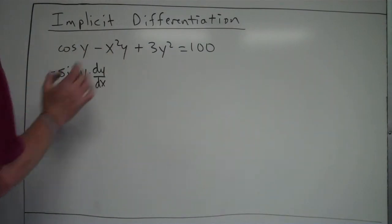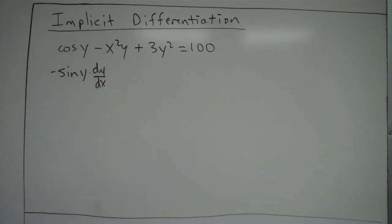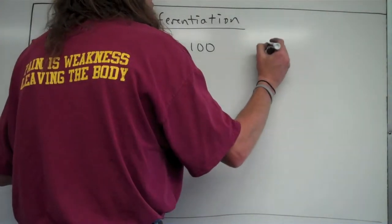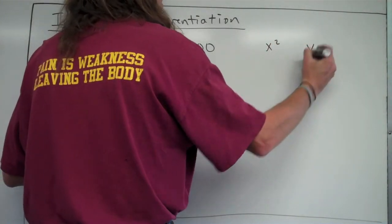Now, this next part, a little tricky right here, we've got to be careful. We're going to have to use the product rule since it's x squared times y. So let me take us over here, so it's going to be x squared is one function and y is the other.